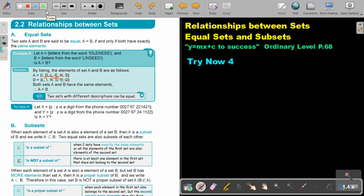Let's start. Let X, this is builder set notation, X is a digit from the phone number, and Y is also a digit from the phone, and then is X equal to Y? So let's start with X.